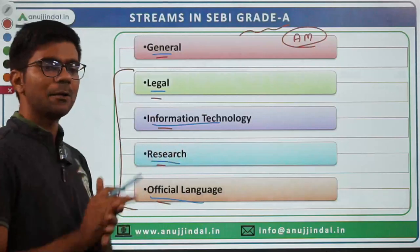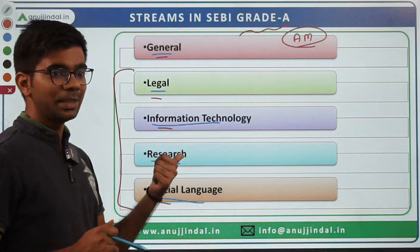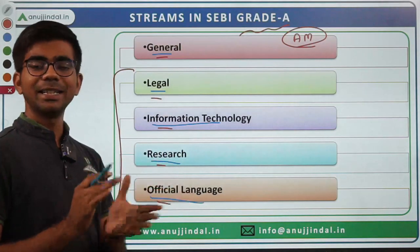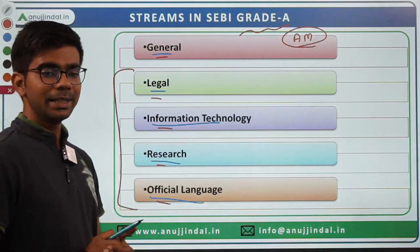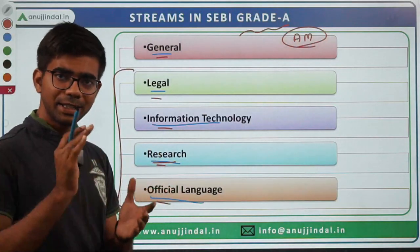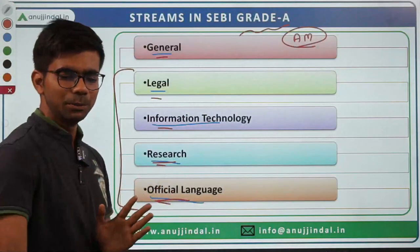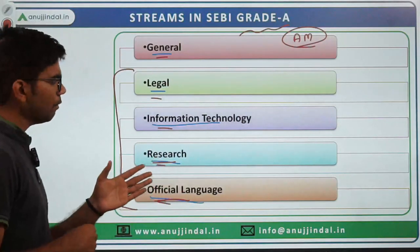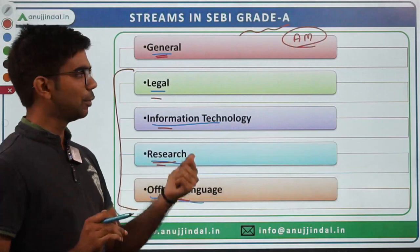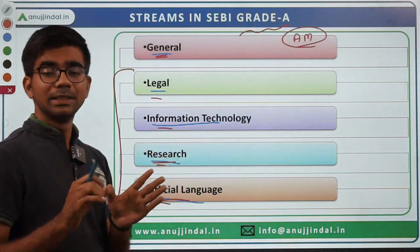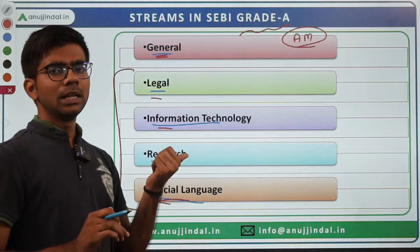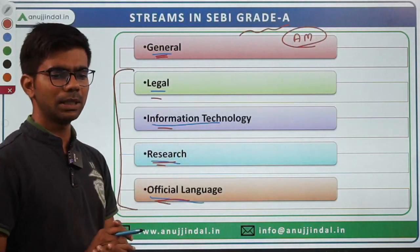The last four streams — Legal, IT, Research, and Official Language — are very specialized. SEBI has a Legal Affairs department, an IT department which is crucial for managing IT infrastructure since trading is now done online, a Research department for policymaking, and an Official Language department for translation. However, SEBI's notification clearly mentions that even if selected in any stream, you can be posted in any department — there is no guarantee a person from the legal stream will go to legal affairs.